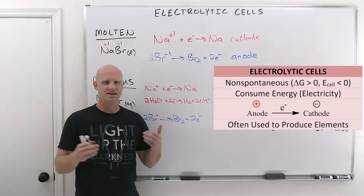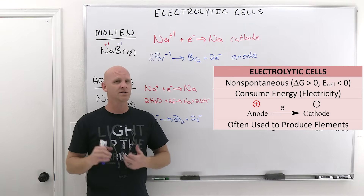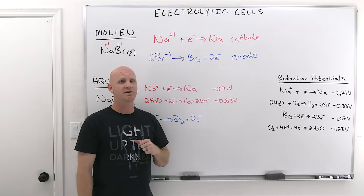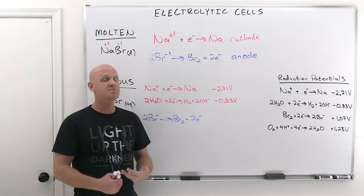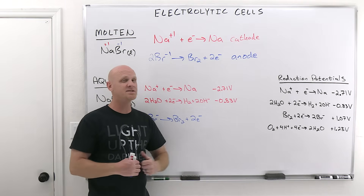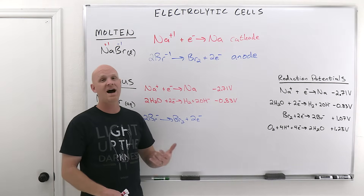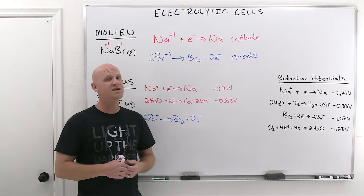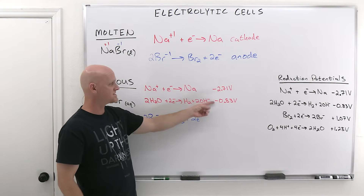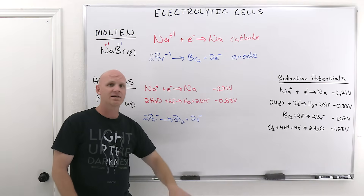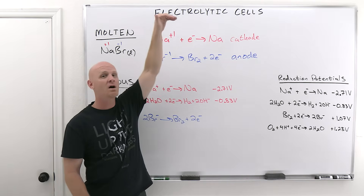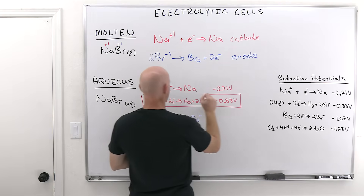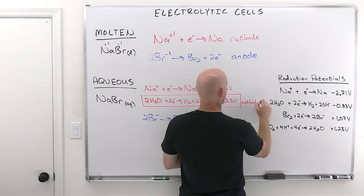Electrolytic cells are non-spontaneous reactions — they have positive delta G values and negative E cell values. Your goal is to put in as little voltage as possible to make the electrolysis reaction happen. You want to pick the highest reduction potential possible for the cathode — most positive, or most commonly, least negative. Negative 2.71 is very negative; negative 0.83 is less negative. So the only half reaction occurring at the cathode is the reduction of water.